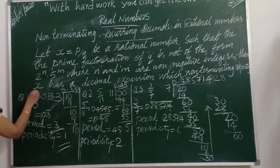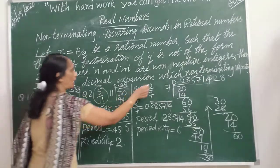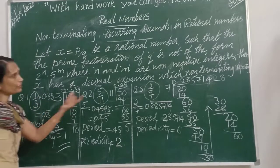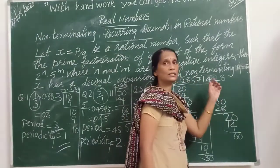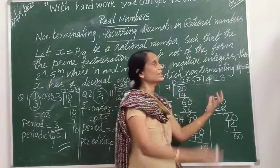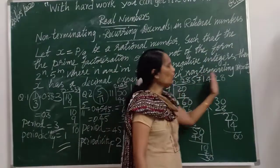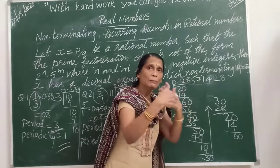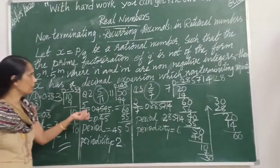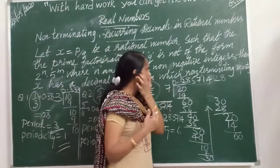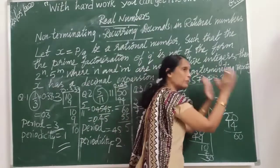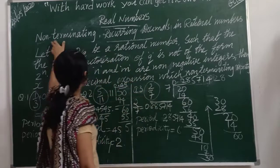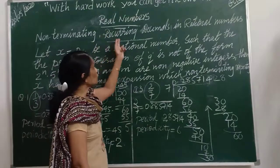If we observe all these numbers — 1 by 3, 5 by 11, and 2 by 7 — in all these cases we got a decimal expansion that is non-terminating: there is no ending for the decimal part, it goes on. Also the same digits are repeating — a particular block keeps repeating, whether it contains 1 digit, 2 digits, 3 digits, or more.